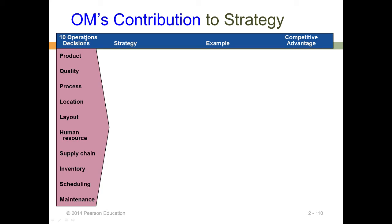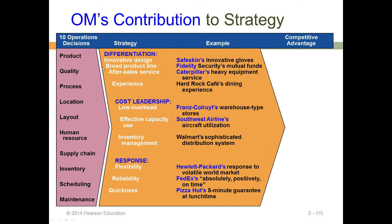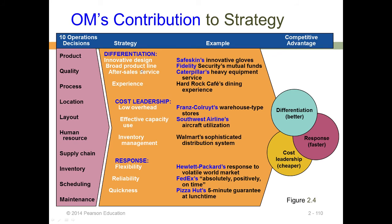How does operations management contribute to strategy? Looking at the ten operational decisions: for differentiation, you expect innovative design, a broad product line, and strong after-sales service or customer experience. For cost leadership, you need lower overheads, effective capacity usage, and proper inventory management. For responsiveness, you need flexible capacity, reliability, and speed of execution.